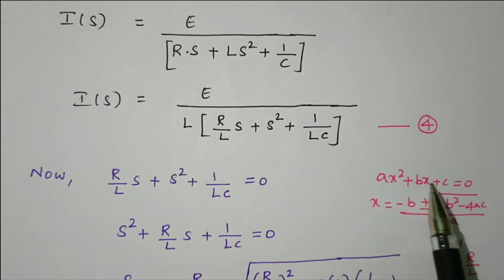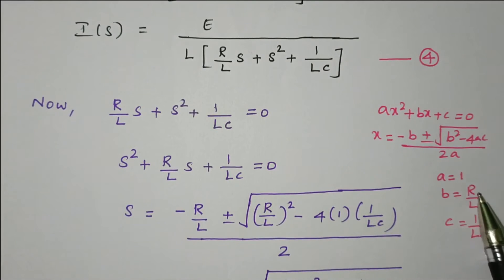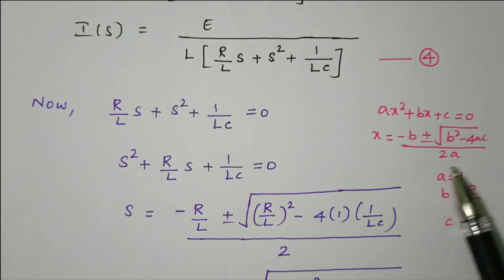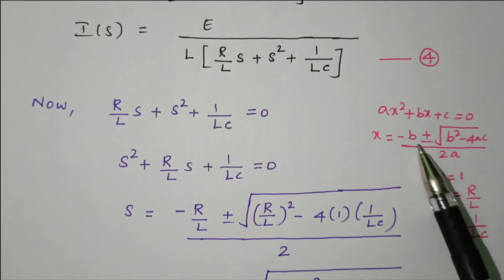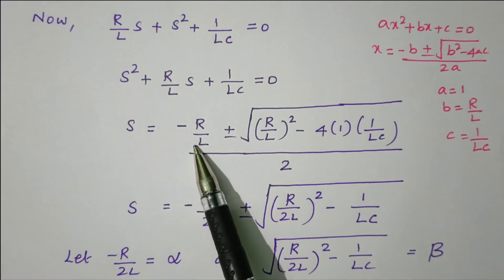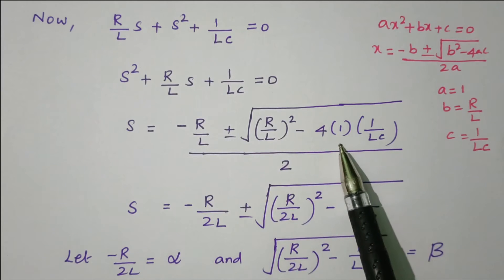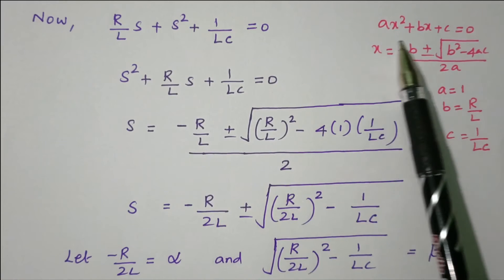Comparing with the quadratic equation AX² + BX + C = 0, here A = 1, B = R/L, and C = 1/(LC). The general quadratic formula gives X = [−B ± √(B² − 4AC)] / 2A. Substituting: S = [−R/L ± √((R/L)² − 4·(1/LC))] / 2. Simplifying by dividing through by 2: S = −R/(2L) ± √[(R/(2L))² − 1/(LC)].